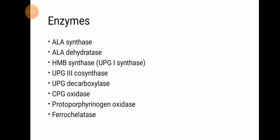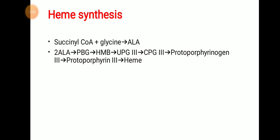There are 8 enzymes: ALA synthase, ALA dehydratase, HMB synthase, UPG3-cosynthase, UPG decarboxylase, CPG oxidase, protoporphyrinogen oxidase, and ferrochelatase. Two ALA molecules react to form porphobilinogen in the presence of ALA dehydratase.